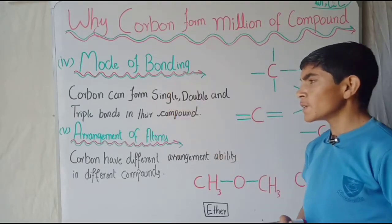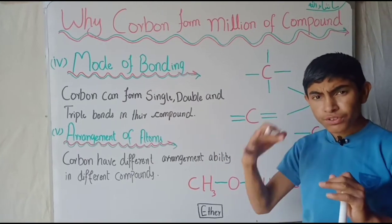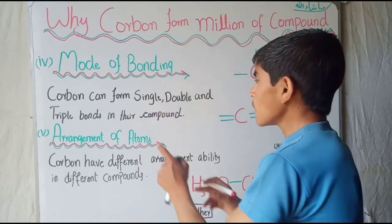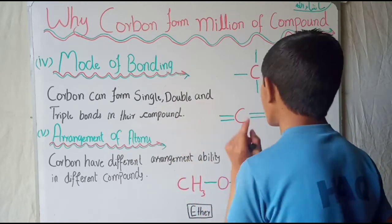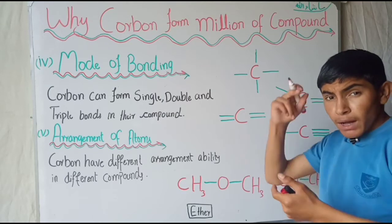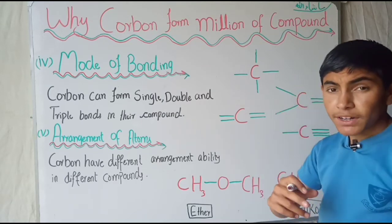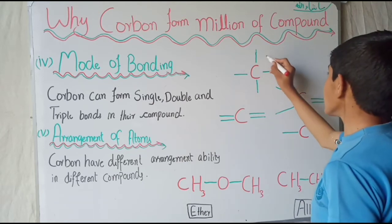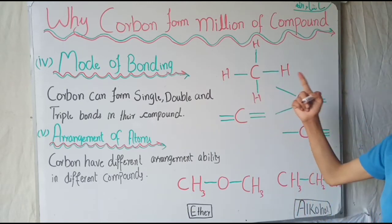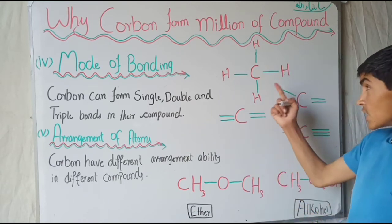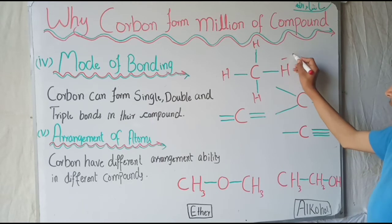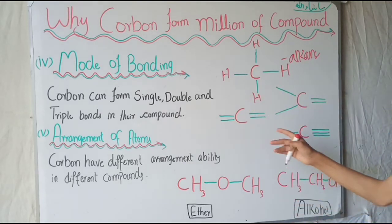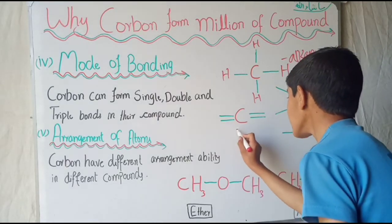The next reason for carbon's uniqueness is multiple bonding. Multiple bonding is also a very good property of carbon in order to occur in unique structures and form different organic compounds. Carbon can form single, double, and triple bonds in a compound. When carbon makes a single covalent bond, this is called an alkane. Carbon can also form a double covalent bond; this is an example of an alkene.